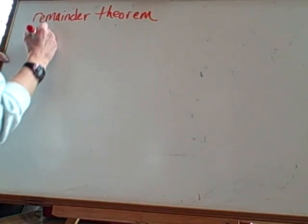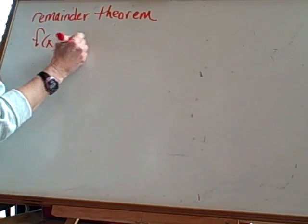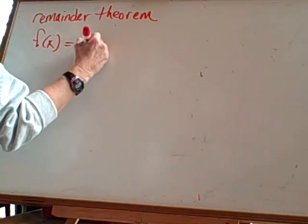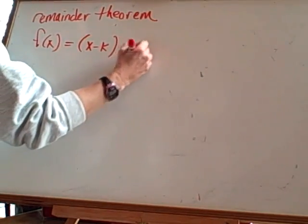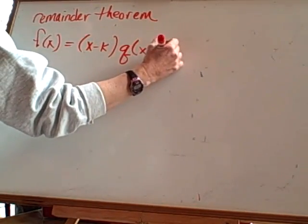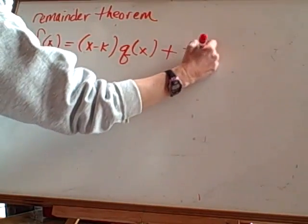If a polynomial f of x is divided by x minus k, then the remainder is r, which equals f of k. Thus, f of x equals what you divided by, which was x minus k, times whatever's left plus your remainder, which was r, which we're going to write as f of k.